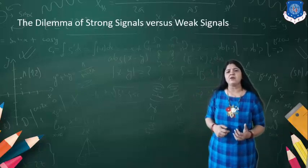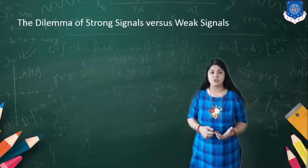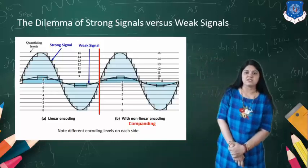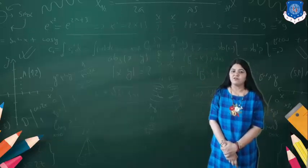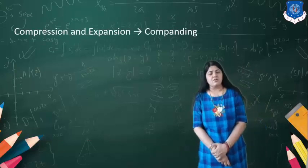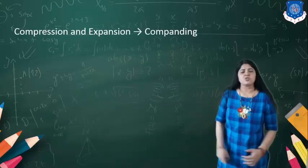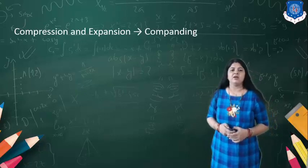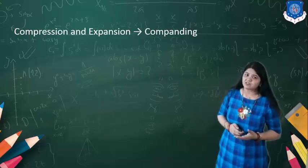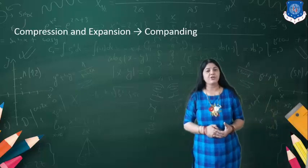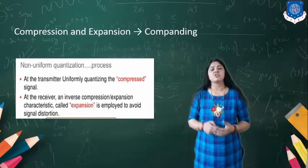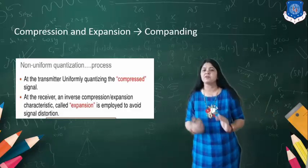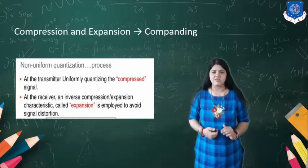So why is companding used? There is the dilemma of strong signals versus weak signals. Compression and expansion — referred to as companding — is used at the transmitter end, while expansion is used at the receiving end.